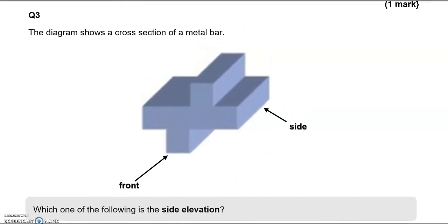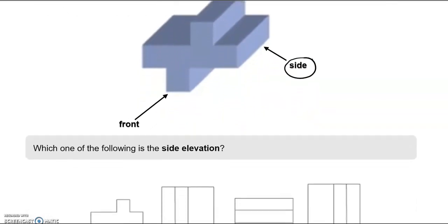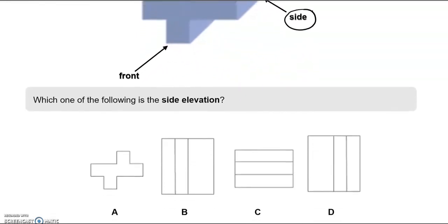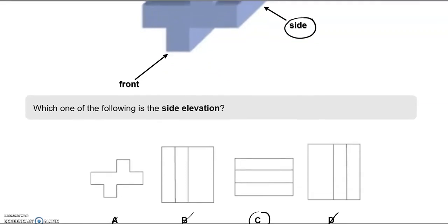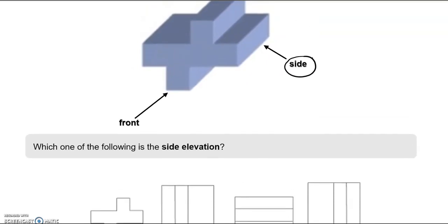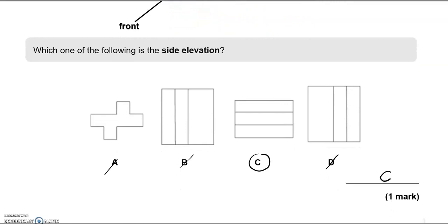The diagram shows a cross section of a metal bar. Which one of the following is the side elevation? So this one here. Right, so it is not A, not B, not D. So it's got to be C, looking at the direction of it, the horizontal bars. So we'll write C here.